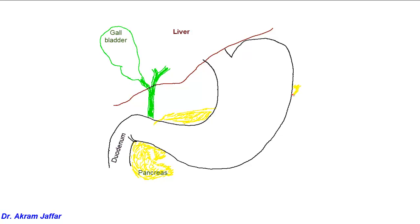Here is the region of the hilum of the kidney, toward the spleen, in the lienorenal ligament. The other structure that is supplied by the celiac trunk is the spleen.